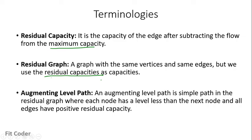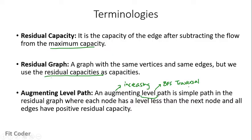The third term is the augmenting level path. Augmenting means increasing. An augmenting level path is a simple path in the residual graph where each node has a level less than the next node, and all edges have positive residual capacity. When we talk about level, we are talking about the BFS traversal level for each vertex. We will see in the pseudocode what we mean by the augmenting level path.